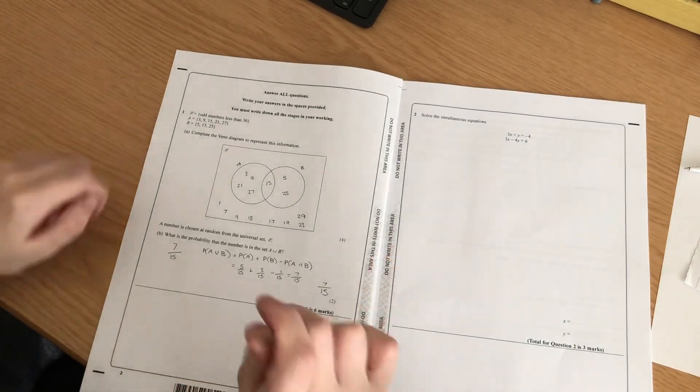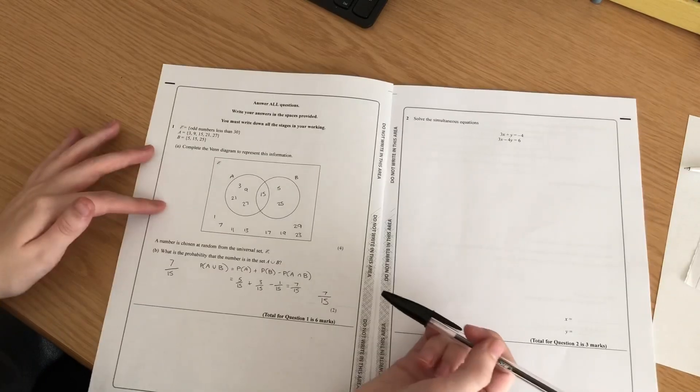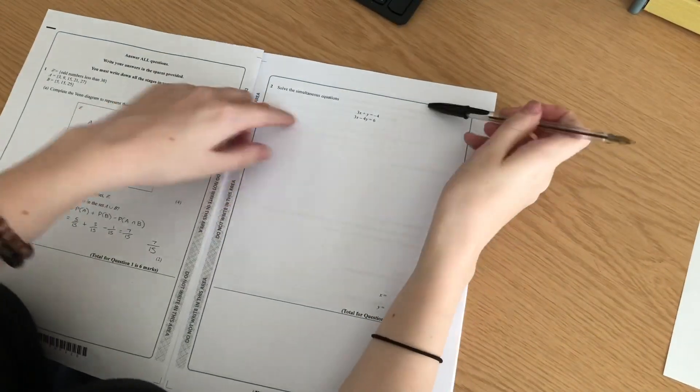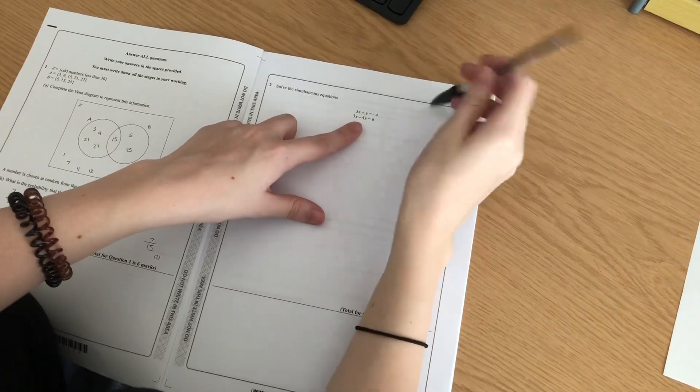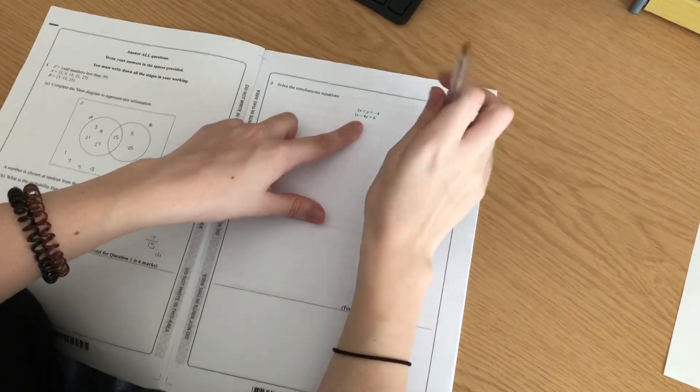And it carries through across everything, but obviously at GCSE you just don't need it. I used to hate simultaneous equations - I could never solve it when there was two like that - but I remember coming out of that exam thinking, yeah, I've solved it.